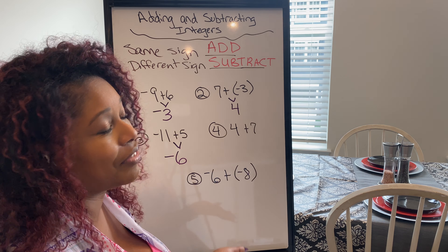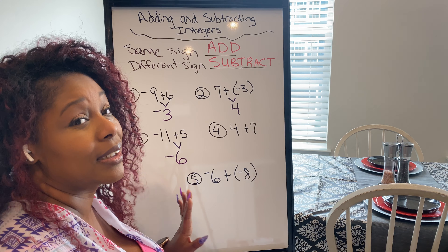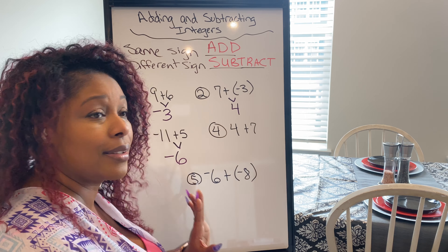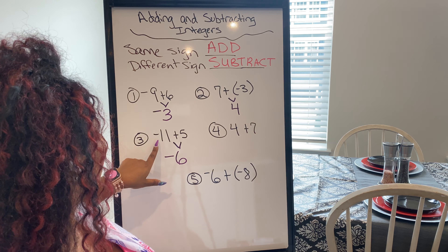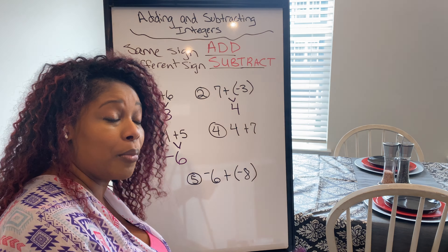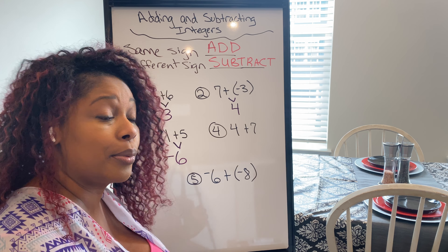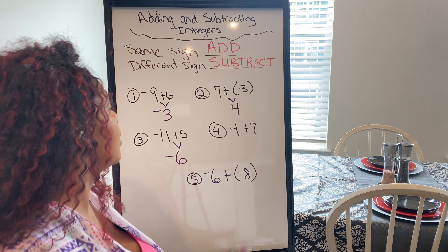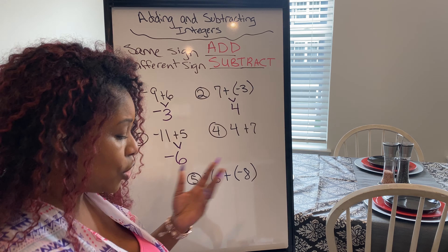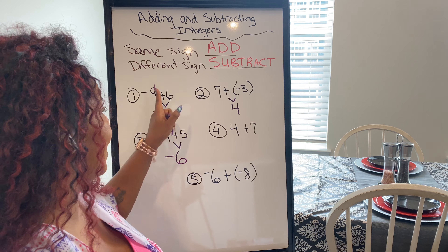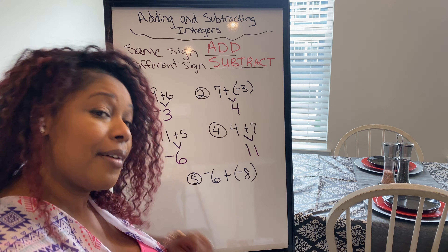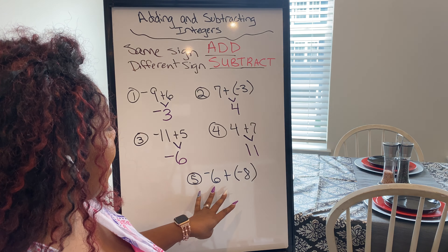The answer is negative 6. Negative 11 is further from zero, so the sign that stays is negative. Now, do we have the same sign? Yes — so because we have the same sign we're going to add. You don't have as much trouble when it's the same sign, which is why I gave more different-sign examples. For 4 plus 7, the answer is 11.